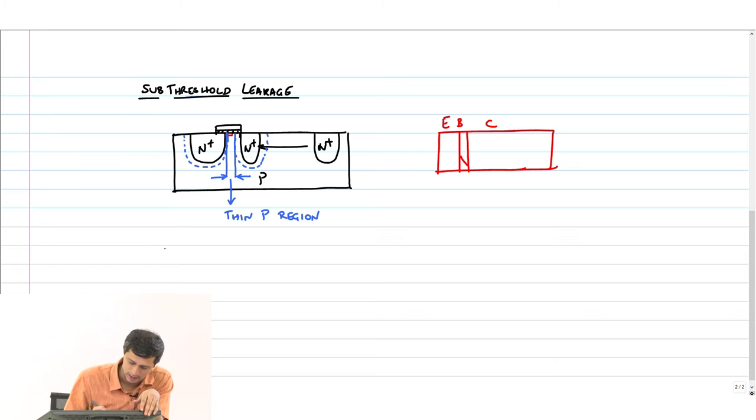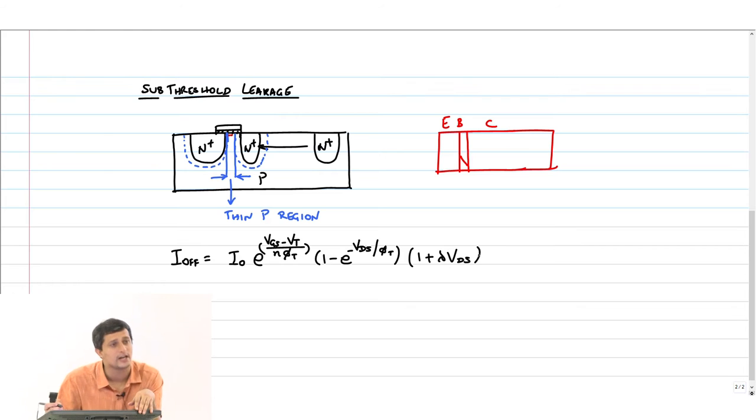Not surprisingly, because this is like a bipolar junction transistor now, the current I off is, by the way what was I off in our earlier model? Zero. Now, we are saying that is not true. It is some current I naught e^(V_GS minus V_T by N phi T) times (1 minus e^(-V_DS by phi T)) times (1 plus lambda V_DS). My V_GS is now going to affect your leakage current exponentially, and so will your threshold voltage.